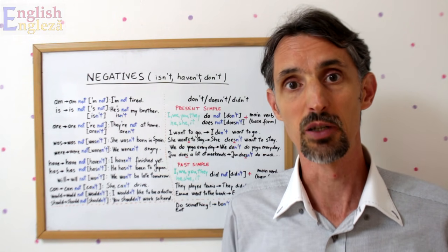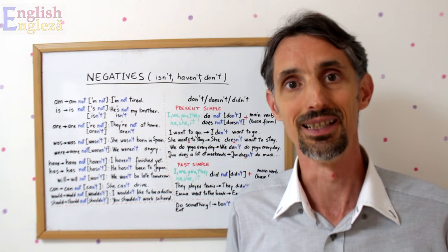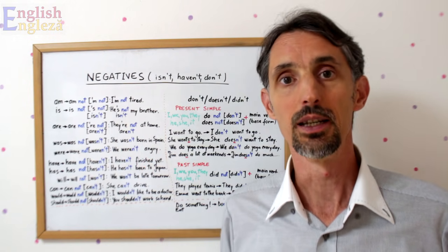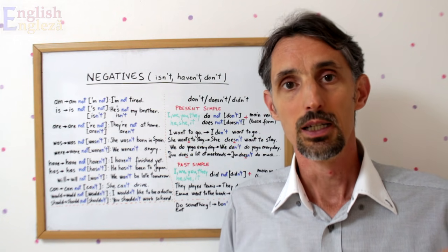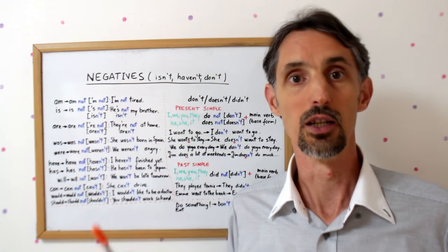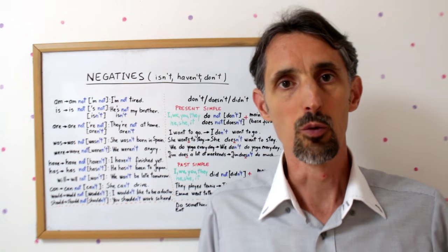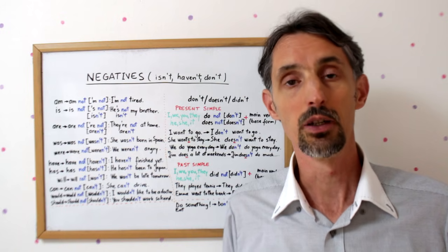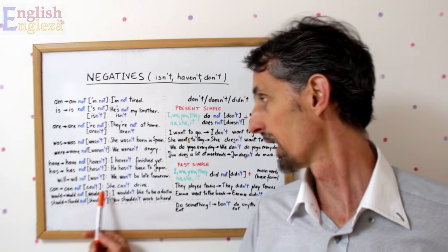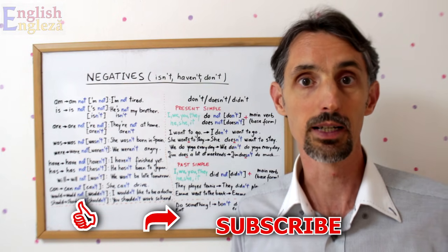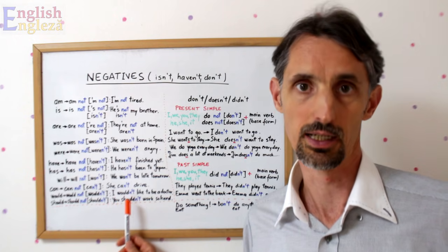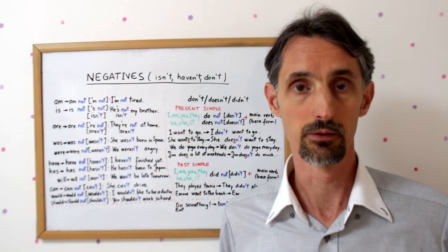Această negație NOT poate apărea și sub forma prescurtată N apostrof T. Și în acest caz, pentru că vocala O dispare, se pronunță N-T. Ca în exemplu, He is not my brother. El nu este fratele meu. În varianta prescurtată devine He isn't my brother. El nu e fratele meu. Sau, propoziția SHE CAN DRIVE, ea poate să conducă o mașină, poate deveni SHE CANNOT DRIVE sau în varianta prescurtată SHE CAN'T or SHE CAN'T în engleza britanică DRIVE.